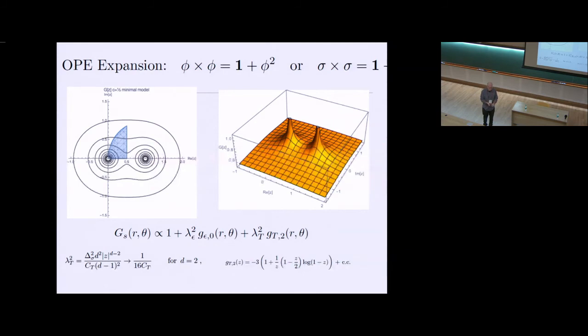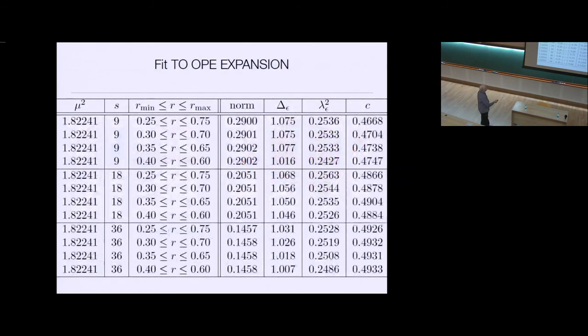We can look at the four-point function. We can get the anomalous dimensions and the coupling constants. Indeed, here is the four-point function map. Then we decided, suppose we didn't know. It's kind of a toy problem. Suppose we did not know the exact answer for the four-point function and we leave free the coupling constant to epsilon and the energy momentum tensor and the dimension here, the dimension of this operator. Could we then use the data to find the answer to the Ising model in the OPE expansion?